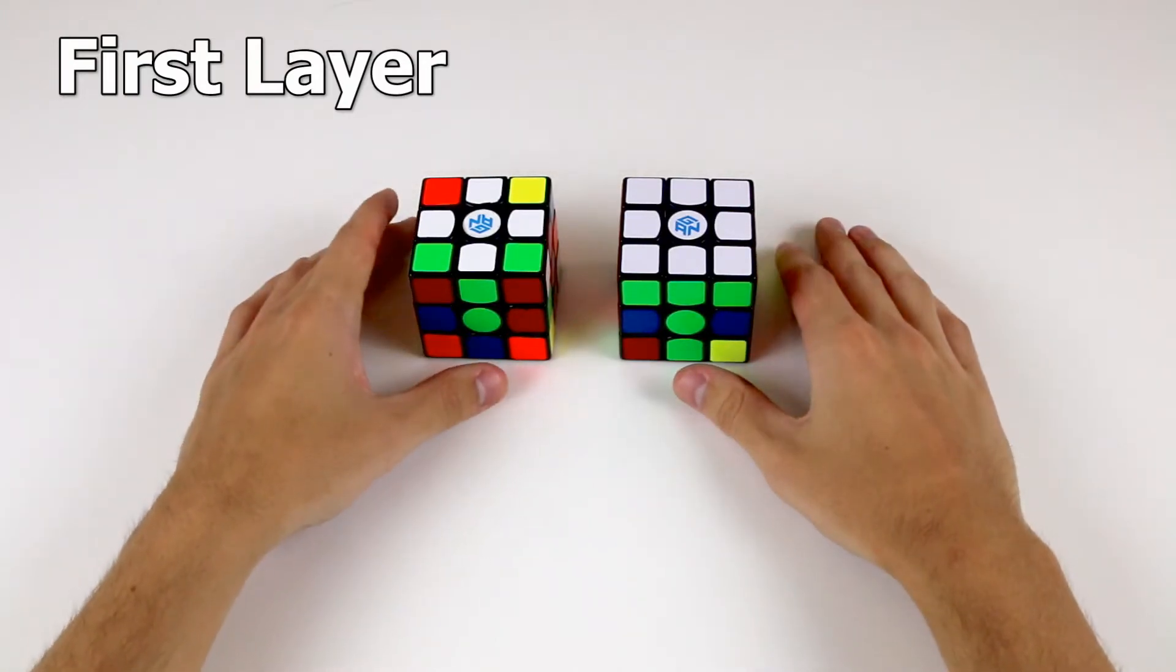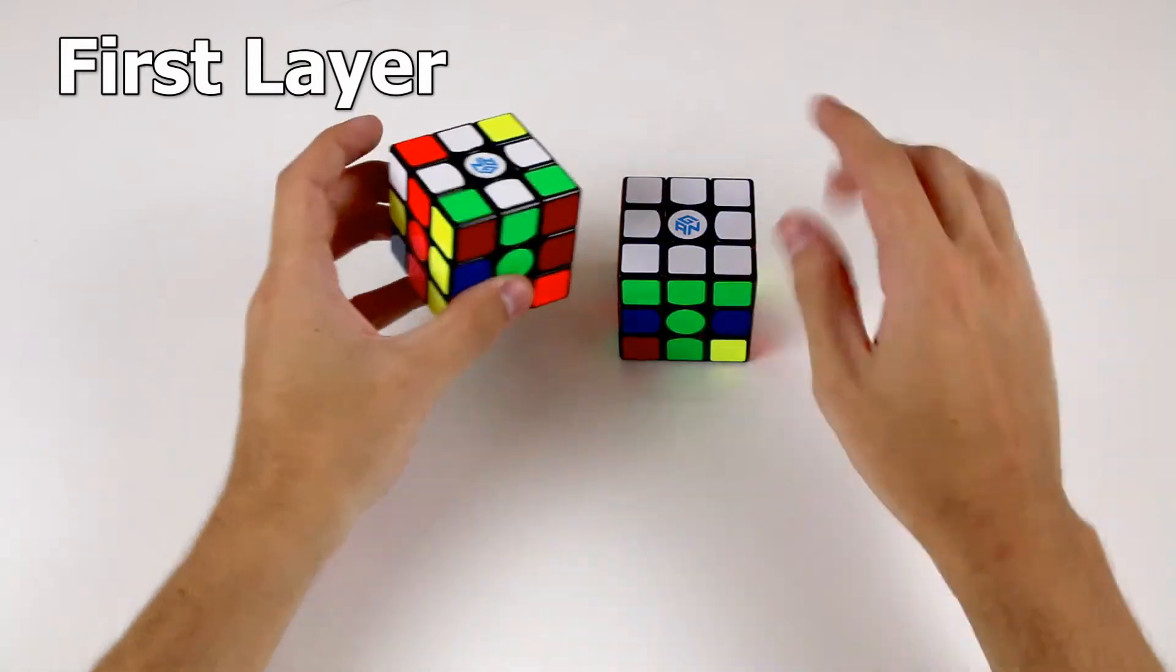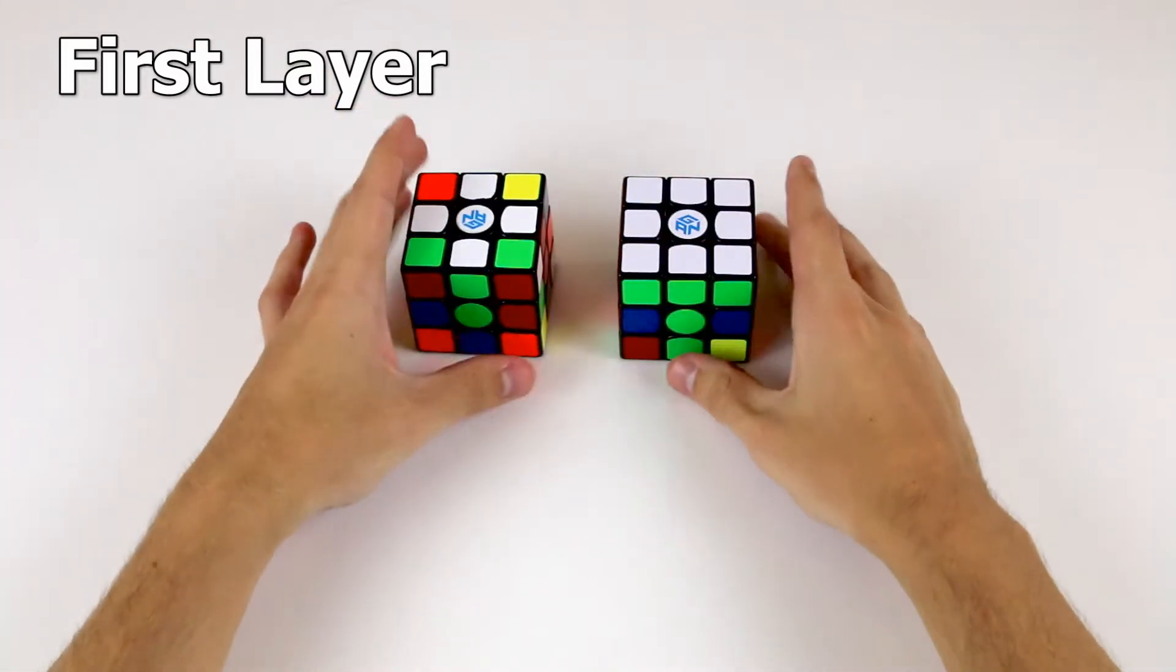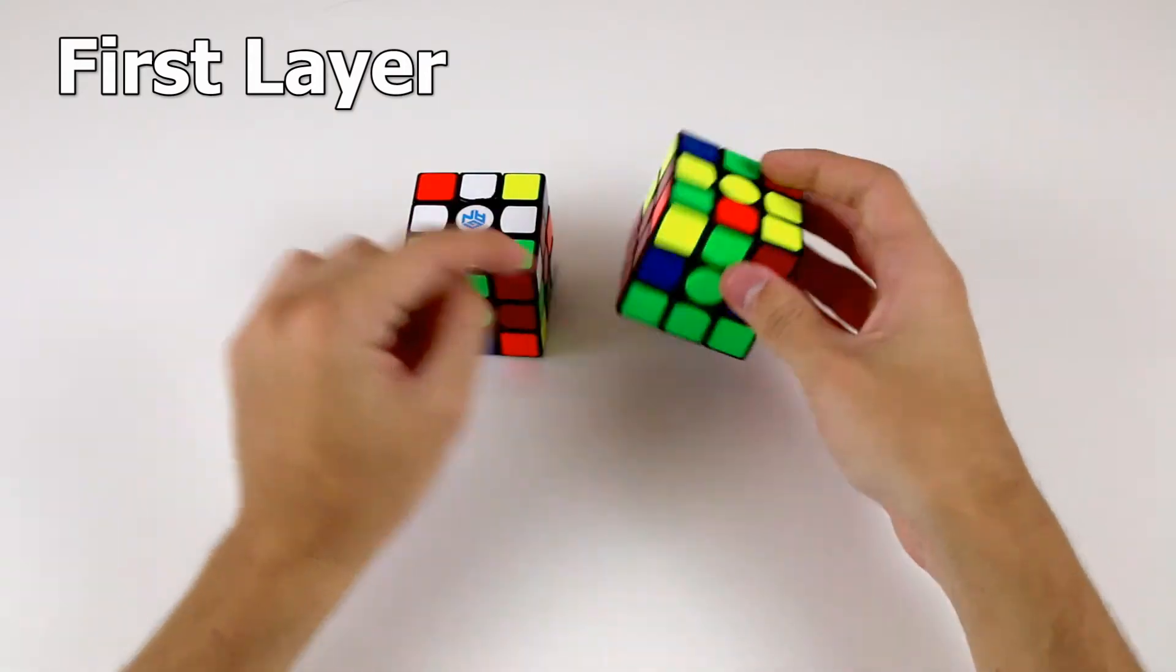We solve the first layer in two steps, firstly by solving this cross, which involves placing four edge pieces around a center piece, and then we flip it over and solve the four corner pieces of our first layer.